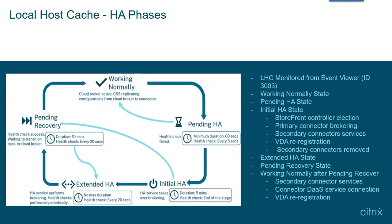If health checks pass, connectors will go into pending recovery mode. If they fail, the extended HA phase will begin. During this phase, only the primary connector will continue to function for XML, STA, and VDA registration services. VDAs will continue to show as unregistered and power state as unknown. There is no time limit for extended HA mode, and health checks will run every 20 seconds.